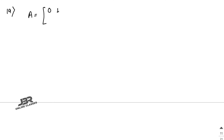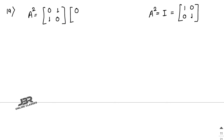Sum number 19: A = [0, 1; 1, 0]. Show that A² = I. Multiply A with itself: 0×0 + 1×1 = 1, 0×1 + 1×0 = 0, 1×0 + 0×1 = 0, 1×1 + 0×0 = 1. So A² = [1, 0; 0, 1] = I. It is proved — very easy.